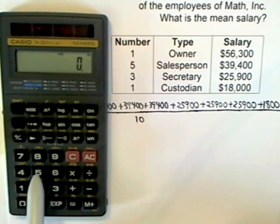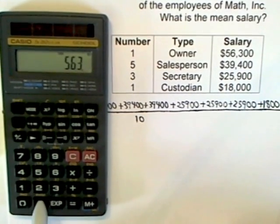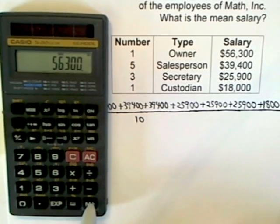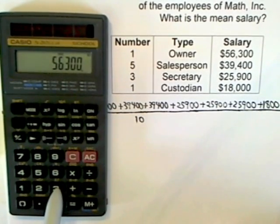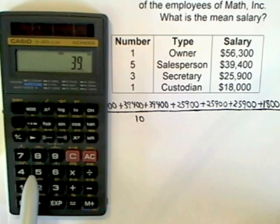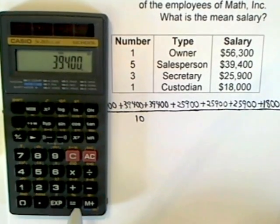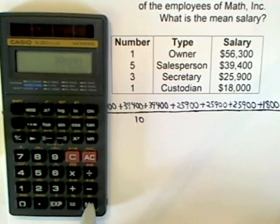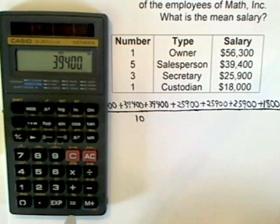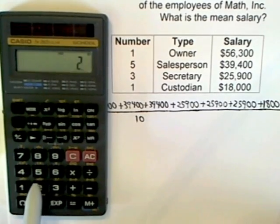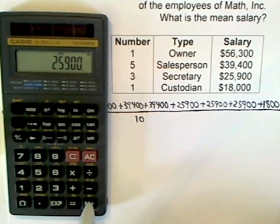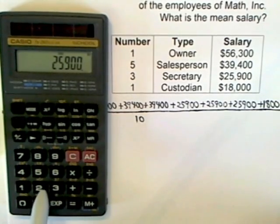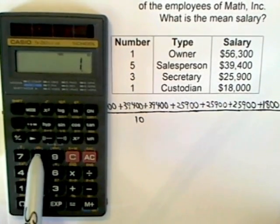Enter 56,300 and press M+ to enter it. Then enter 39,400 and press M+ five times. Then enter 25,900 and press M+ three times. And then the custodian's salary, 18,000, and enter it once.